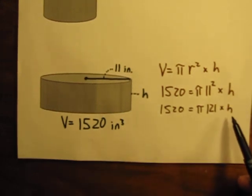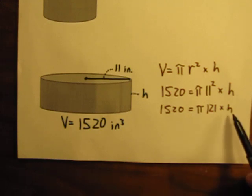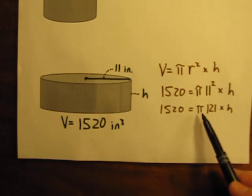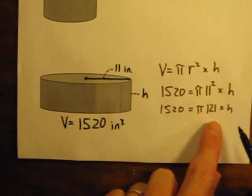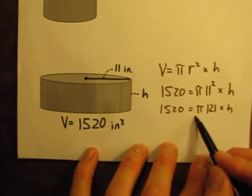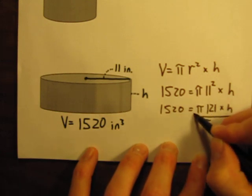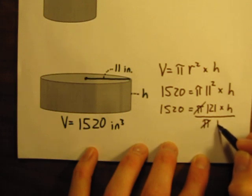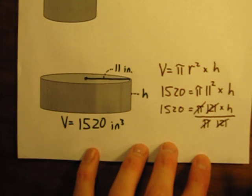So pi times 121 times h. And now, let's get h by itself. Now we're just solving an equation. So this is going back to some very basic math, very basic pre-algebra. How do we get this h by itself? We have pi times 121 times h. If we want to get rid of these things, we need to do the opposite. The opposite of multiplying is dividing. So if we divide this side by pi, pi's cancel. If we divide this side by 121, the 121's cancel. And that leaves us with only h on this side.